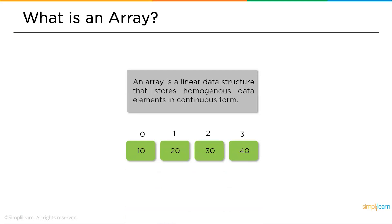So first, what exactly is an array? An array is a linear data structure that stores homogeneous data elements in a continuous form. Homogeneous means you can only store one single data type of elements in an array.